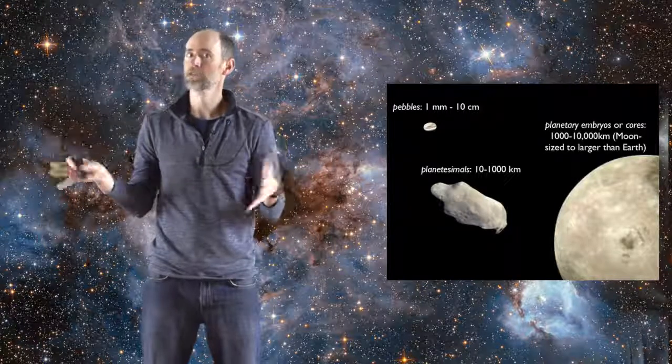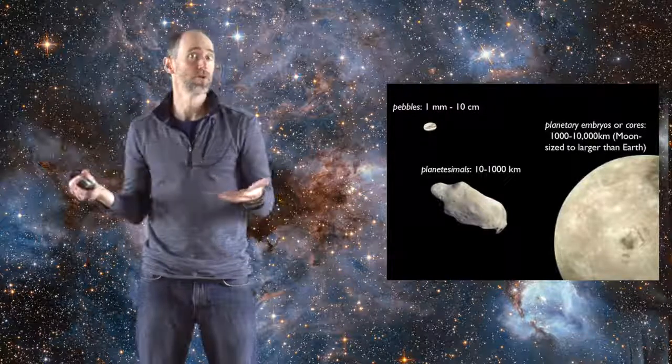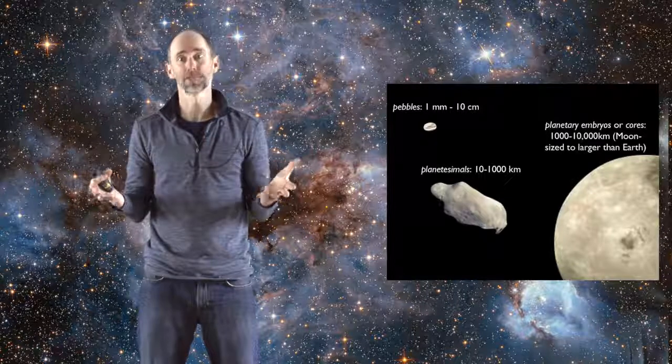Whereas in the outer solar system where Jupiter and Saturn were forming, we think that these planetary embryos, or cores, were more like five to ten Earth masses, so much larger.